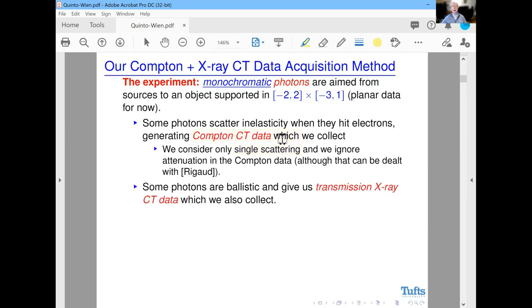We've discussed the Compton data, namely the single backscatter. But also, a lot of the photons go all the way through, so they're ballistic and they give us standard transmission X-ray CT data. So that gives us two sets of data.